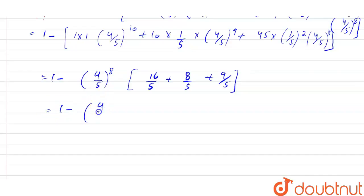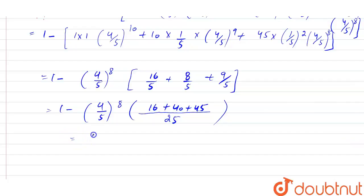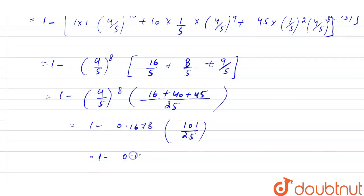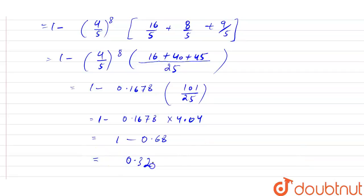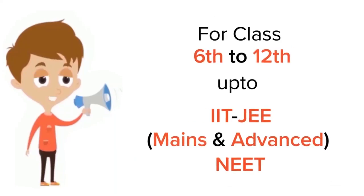Taking (4/5)^8 common gives us the factor with numerator 16 plus 40 plus 45 equals 101, divided by 25. We know (4/5)^8 equals approximately 0.1678. Multiplying: 0.1678 × (101/25) ≈ 0.1678 × 4.04 ≈ 0.68. Therefore the required probability is 1 minus 0.68 equals 0.32. This is our final answer.